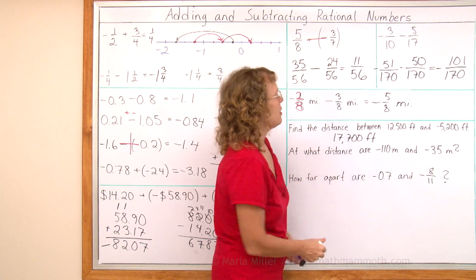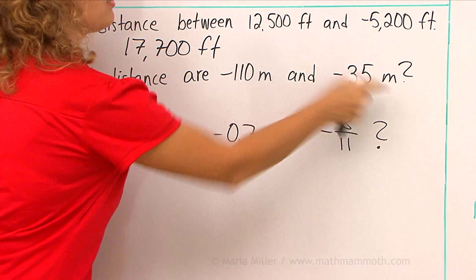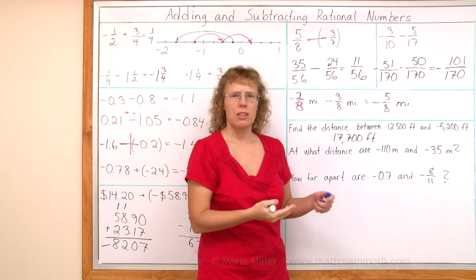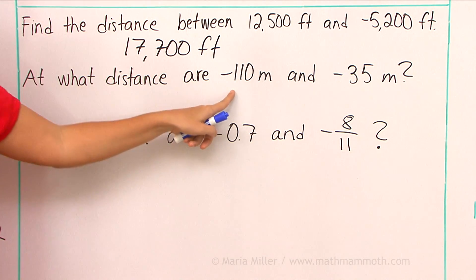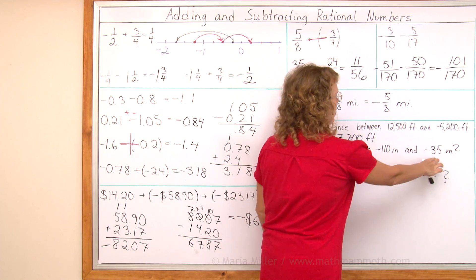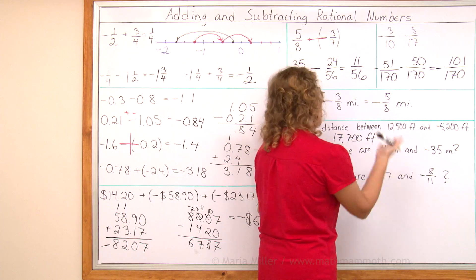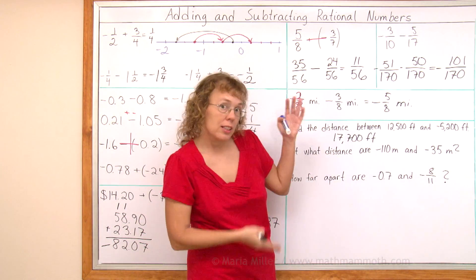At what distance are negative one-hundred ten meters and negative thirty-five meters? Again, think of depth. These would be both below the surface of the ocean. Maybe there's a diver here and a diver here. Or the same diver is rising or whatever. What is the distance that the diver rises?